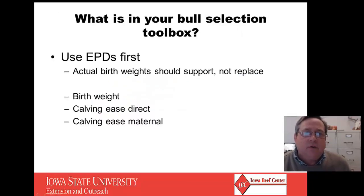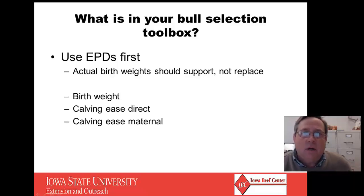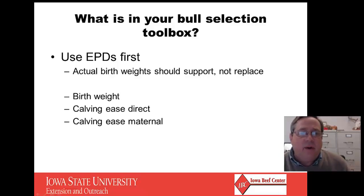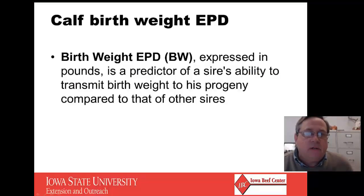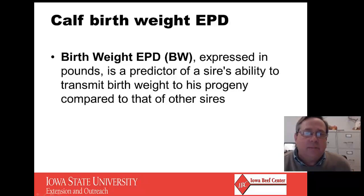What are the things you're going to include in your tool selection for good bull selection? It's important that you use EPDs first. It's fine to know the actual birth weights and that should support your EPD data but not replace it, because you have so much more depth and prediction ability with EPDs. Birth weight EPD is expressed in pounds and is a predictor of the sire's ability to transmit birth weight to the progeny, compared to other sires. You'll have a birth weight EPD that you can compare to other bulls' birth weight EPDs.